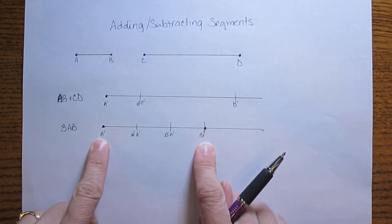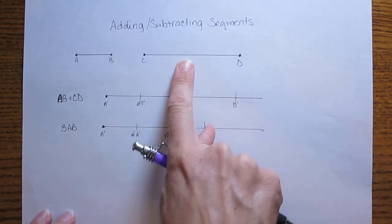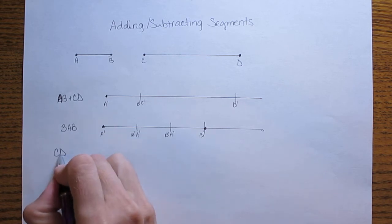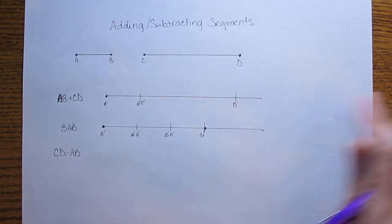Now the last example is to do a subtraction problem. So if I want to take my longer segment CD and subtract AB, here's what that looks like.